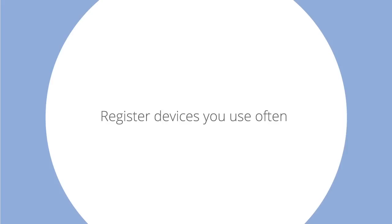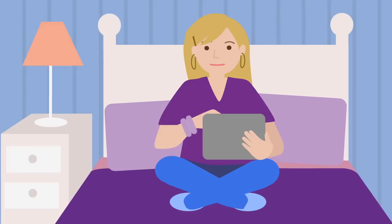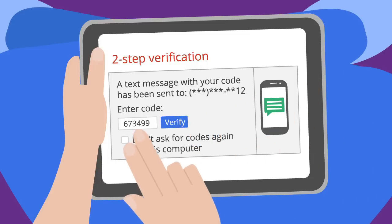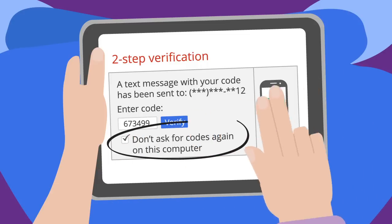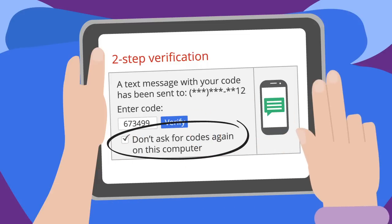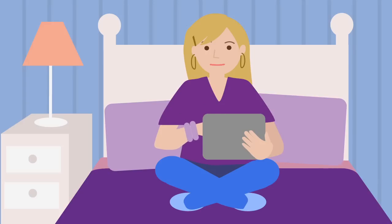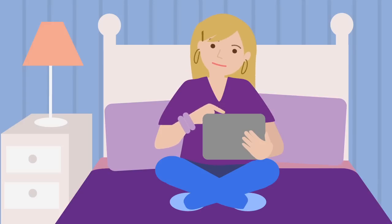Register devices you use often. If you're signing in on a browser and computer you use often, you can check a box so that computer doesn't ask for a code each time. This also works when you're signing in on browsers with other devices, such as phones or tablets.